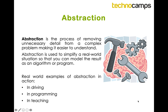Abstraction is a process of removing unnecessary detail from a complex problem and making it easier to understand. For example, if you use Google Maps to travel from A to B, it doesn't tell you about every single strand of grass, tree, rock, or every single house you encounter. It takes away all that unnecessary information and focuses on telling you the route you need to take and the various options available. So that is called abstraction.